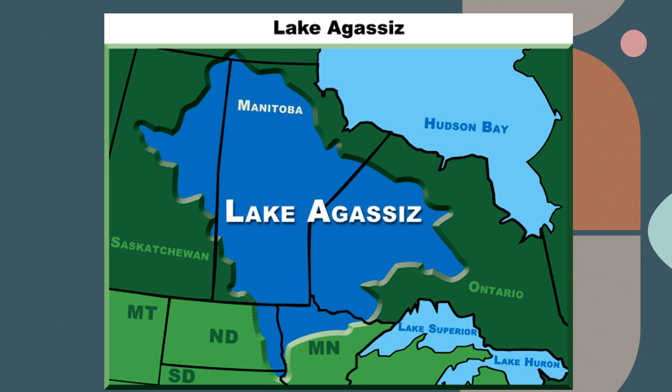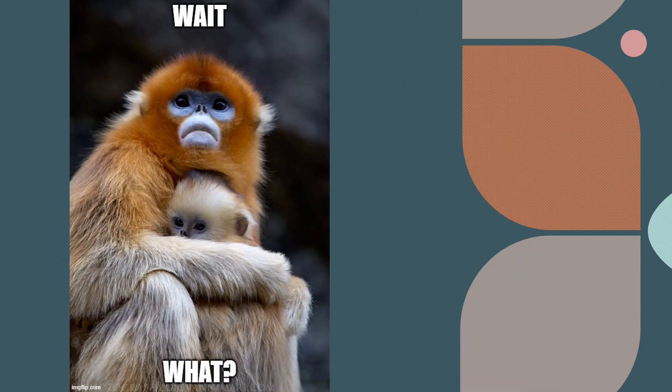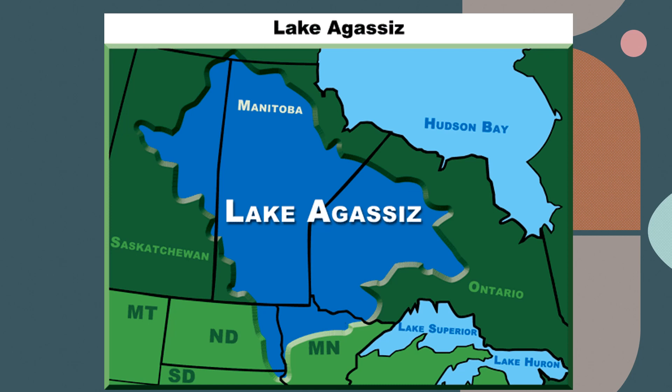Lake Agassiz is located on the edge of the northern Great Plains and runs from the tip of northeastern South Dakota north through Manitoba, covering land from Saskatchewan in the west to Ontario in the east. If you have any knowledge of North American geography, you are probably a bit confused right now. You are thinking: wait, there is no lake there. Sure, we have heard of Lake Superior and Lake Huron — those are great lakes. We have even heard about Hudson Bay. But a lake bigger than all the Great Lakes combined, and maybe even as large as Hudson Bay? This has to be some kind of joke.